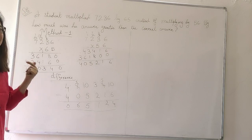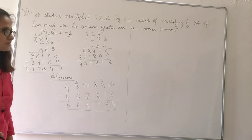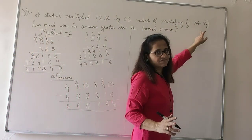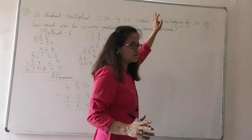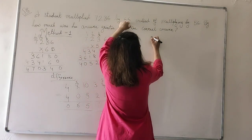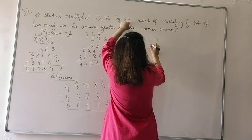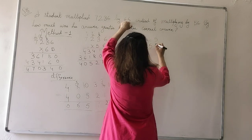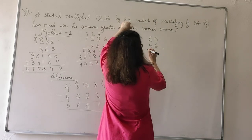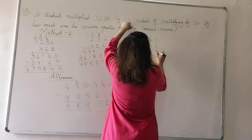A simple and short method. Actually the student was supposed to multiply by 56, but by mistake he multiplied by 65. So what is the difference between 65 and 56? If I subtract 56 from 65, I will get the answer 9.